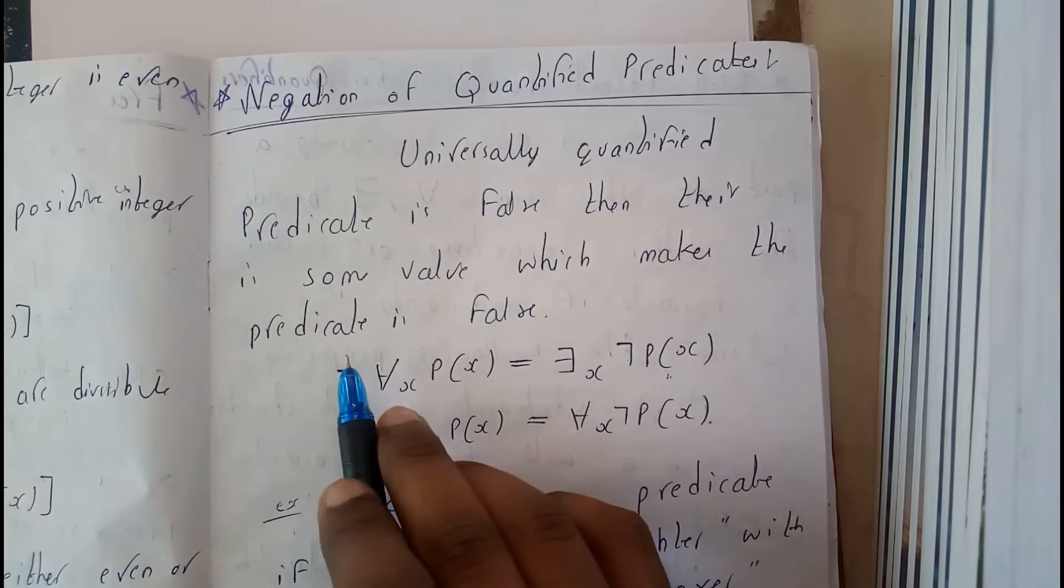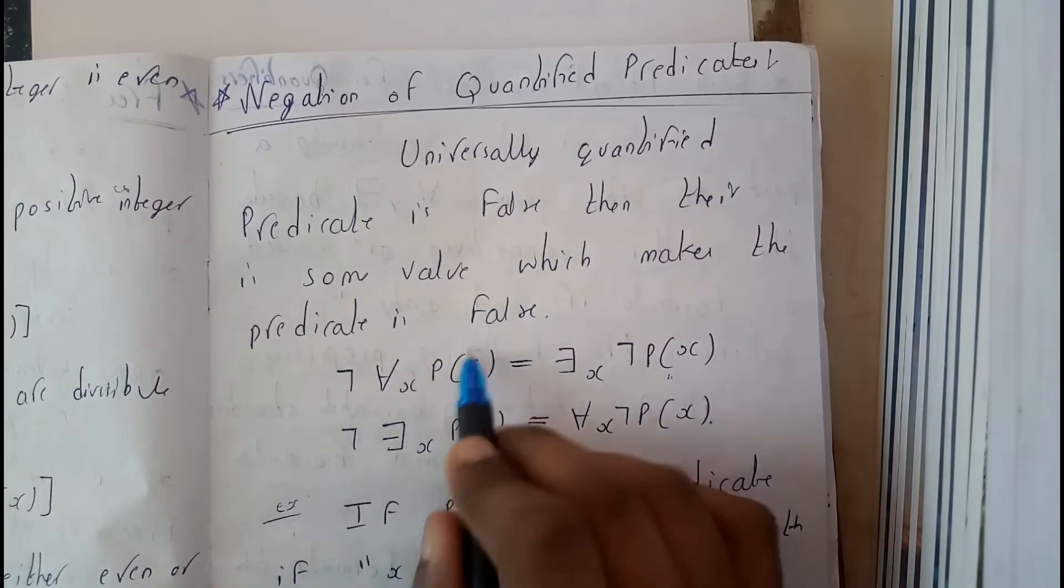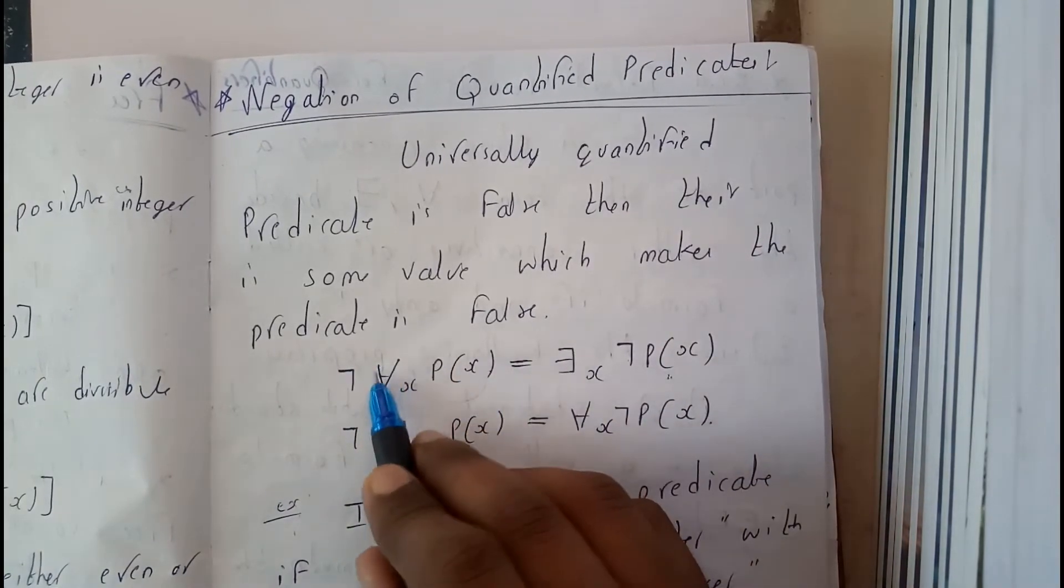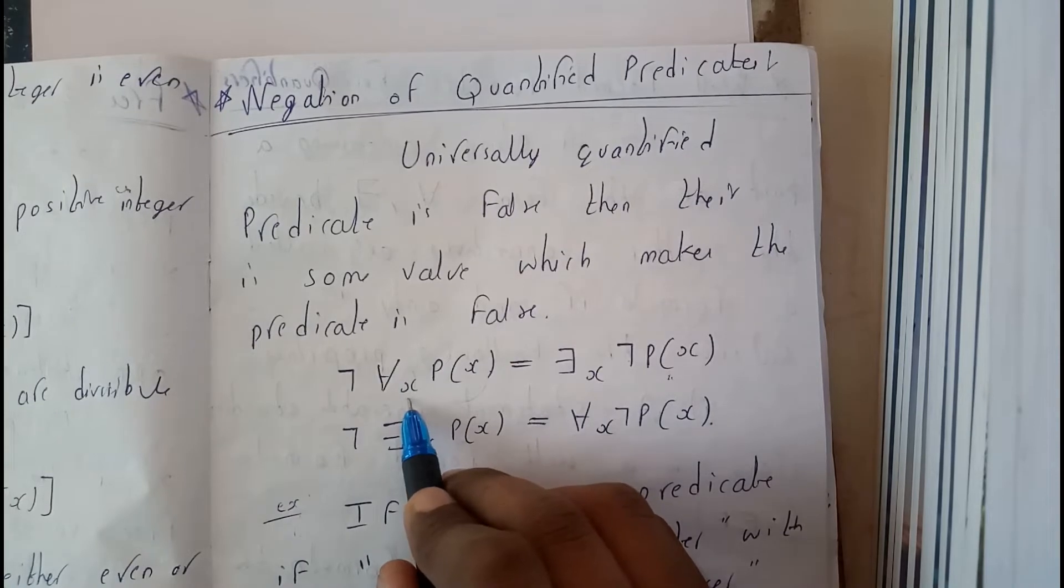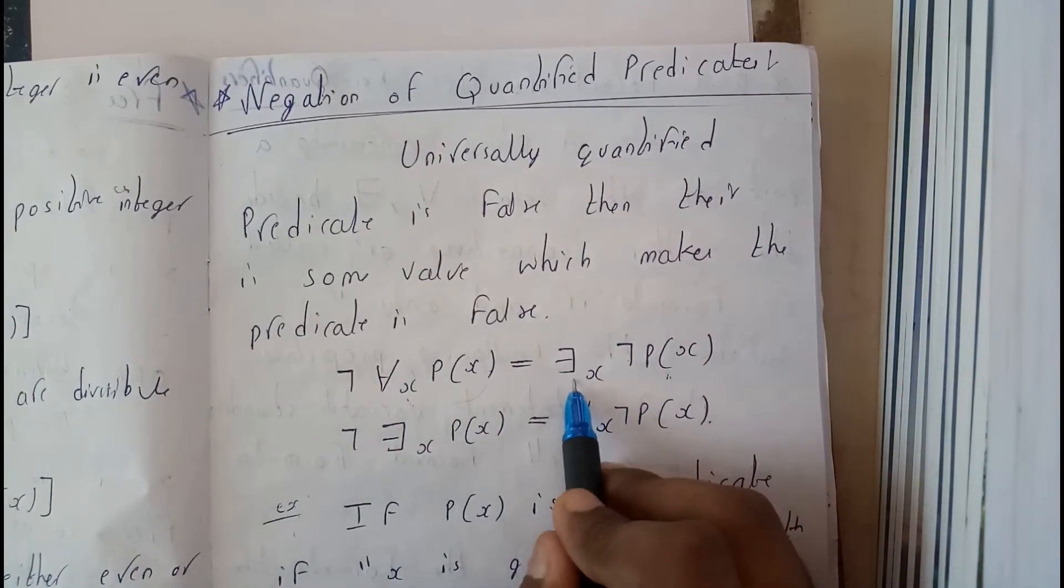equals to - for this opposite, and for this applying negation, this opposite. This is for all, so we'll be writing 'there exists', so for some, that's it, for some negation of P(x).